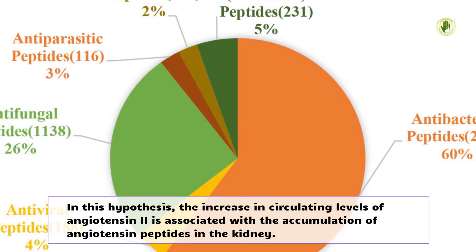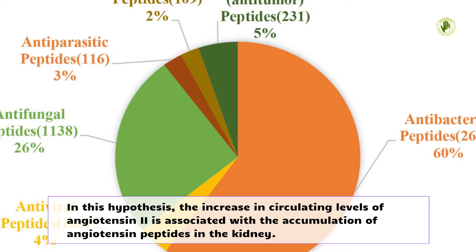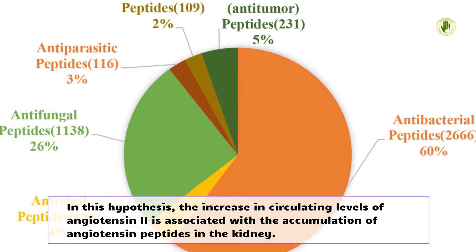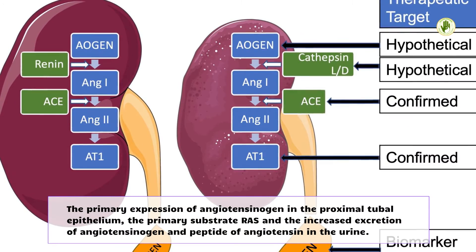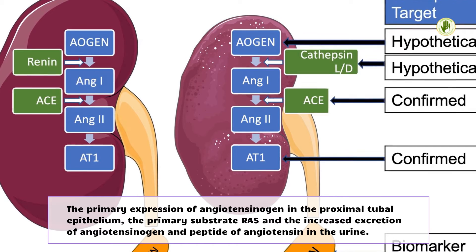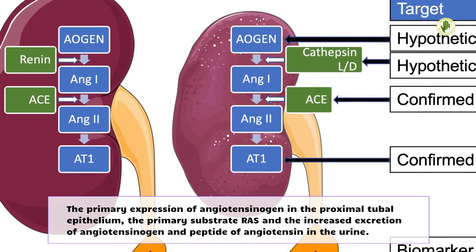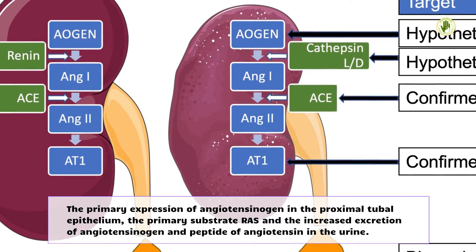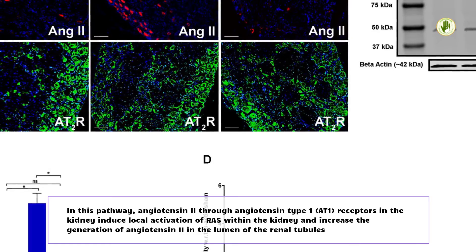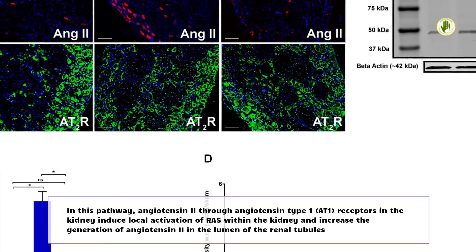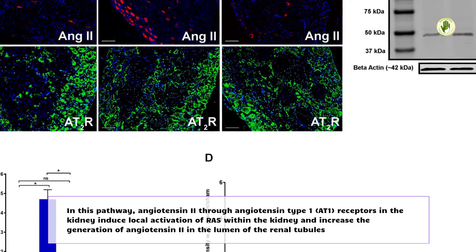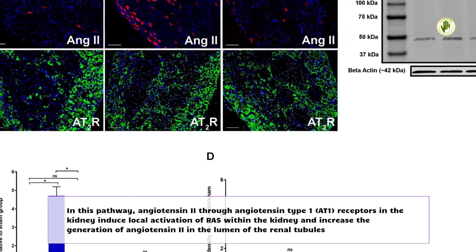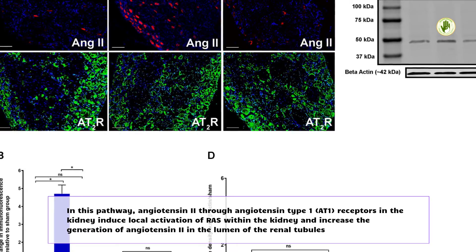In this hypothesis, the increase in circulating levels of angiotensin II is associated with the accumulation of angiotensin peptides in the kidney. The primary expression of angiotensinogen in the proximal tubular epithelium — the primary substrate of RAS — leads to increased excretion of angiotensinogen and angiotensin peptides in the urine. Angiotensin II through angiotensin type 1 (AT1) receptors in the kidney induces local activation of RAS and increases the generation of angiotensin II in the lumen of the renal tubules.